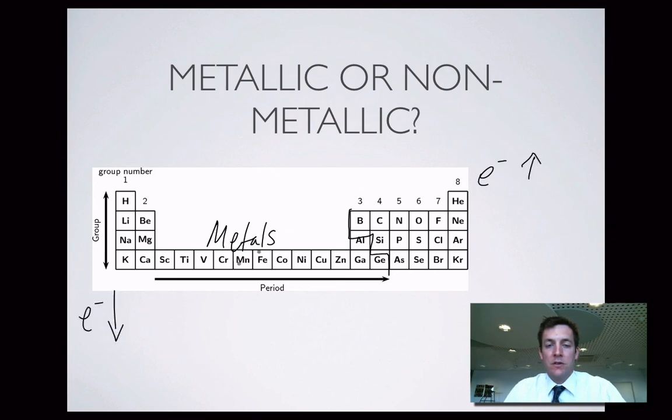So in other words, the further over here you go, the less electronegative things become, the less well they hold on to electrons. And therefore, the more likely they are to release their electrons into this delocalized metal structure.